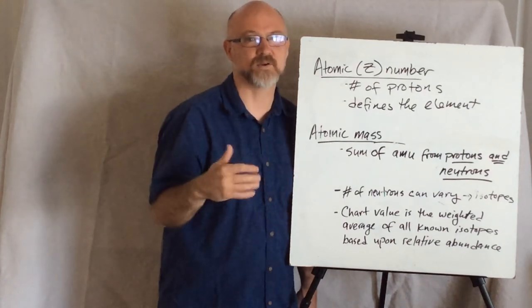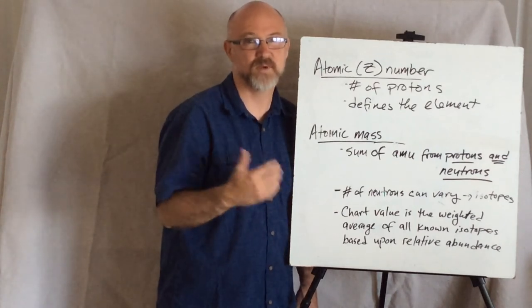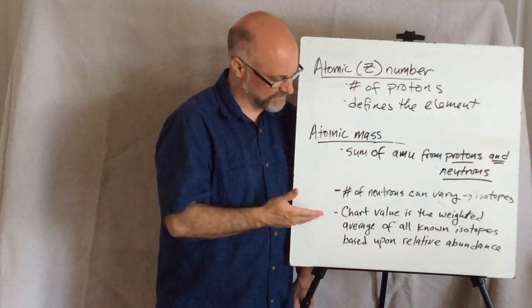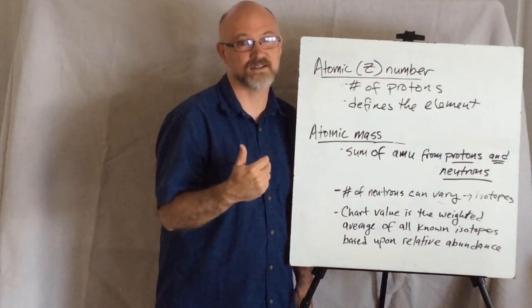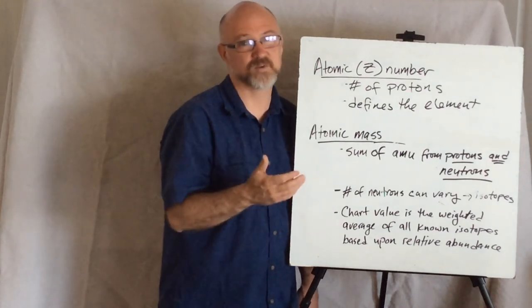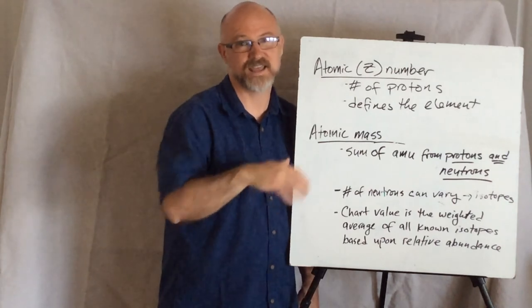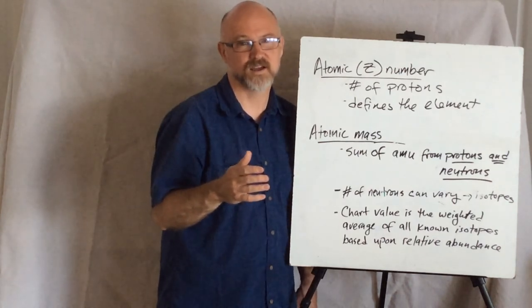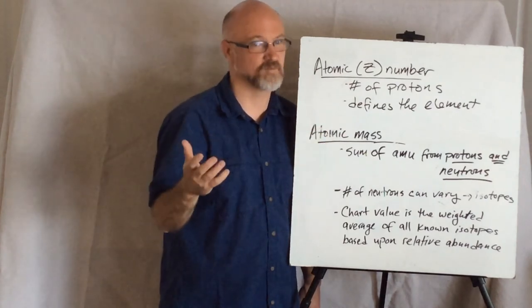And they occur in different amounts, at least as what we've observed in nature. So, based on our observations, the value in the chart is a weighted average. What I mean by that is, if 5% has a particular mass and 95% has a different mass, well we factor that in and say the average mass is based on 95% of one version and 5% of the other.